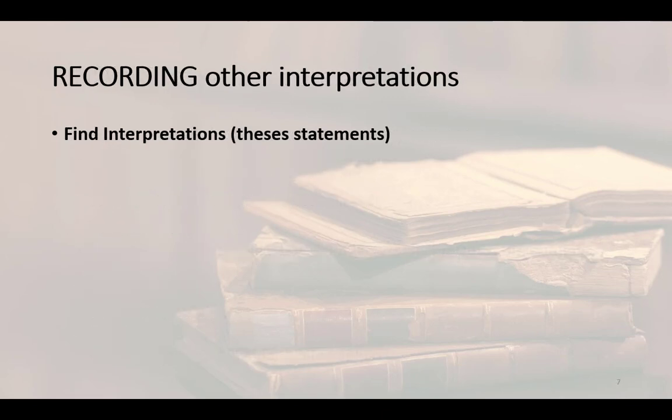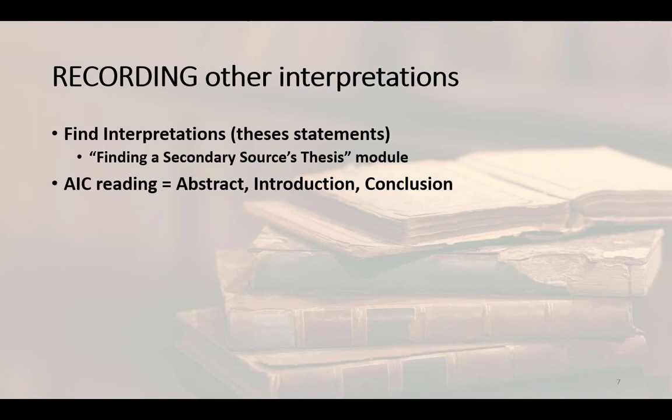When you find secondary sources, you're looking for the claims the authors write that they will support. An earmark of a more complex interpretation is the thesis statement, and more modern scholarship often includes markers like 'this article argues that' and similar markers. Regardless, the thesis statement — the claim that the source supports, the point that the author makes — introduces that author's interpretation. One quick technique to find the author's interpretation is to employ the AIC reading method. AIC stands for Abstract, Introduction, and Conclusion.